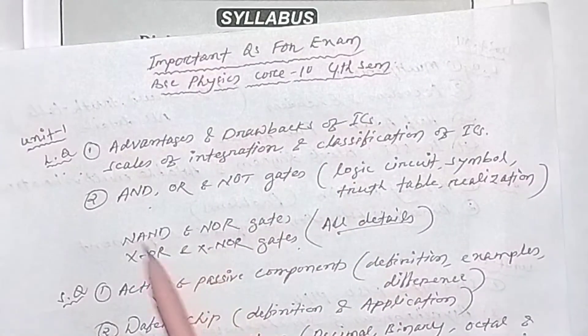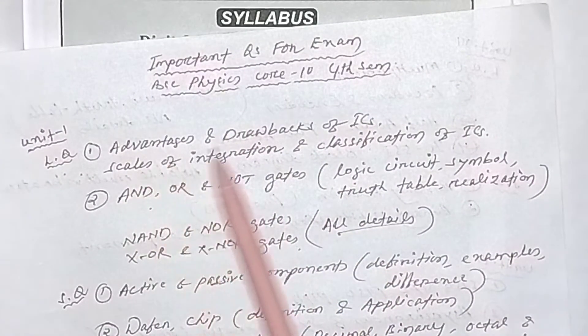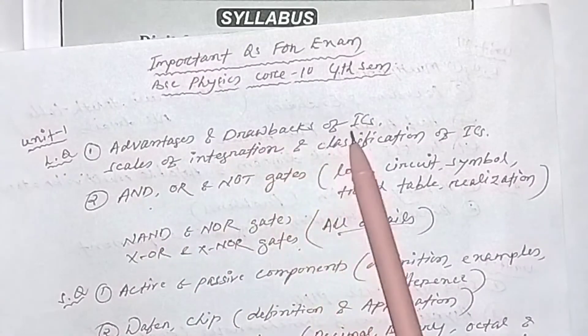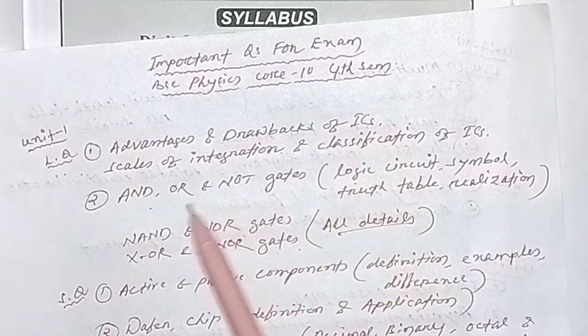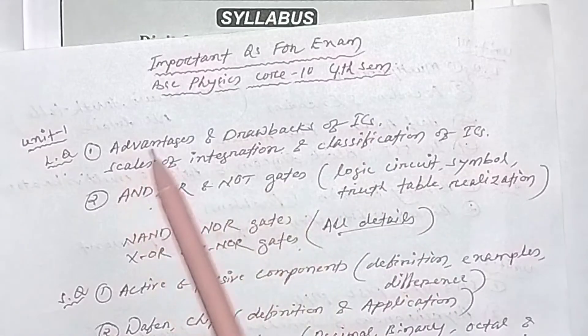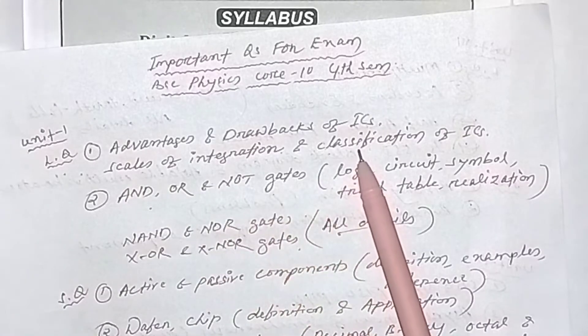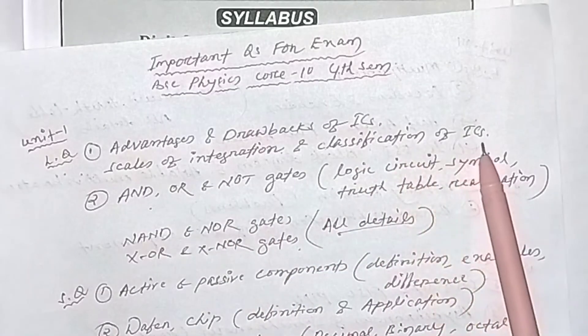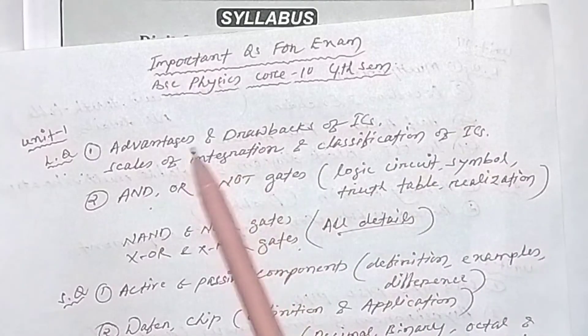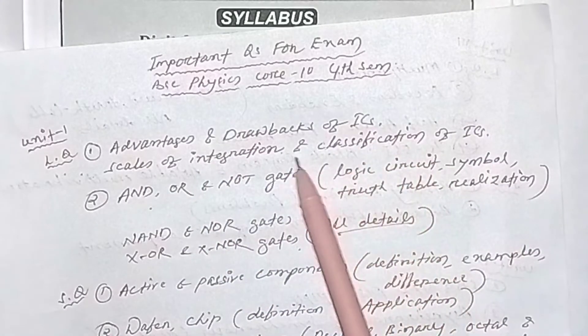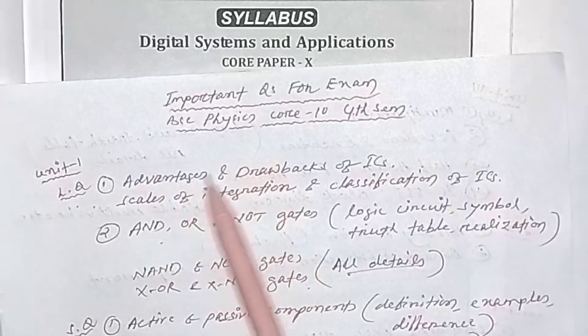In the first chapter, there is an important long question: advantages and drawbacks of ICs — ICs means integrated circuits. You will also see scales of integration and classification of ICs in the first chapter.